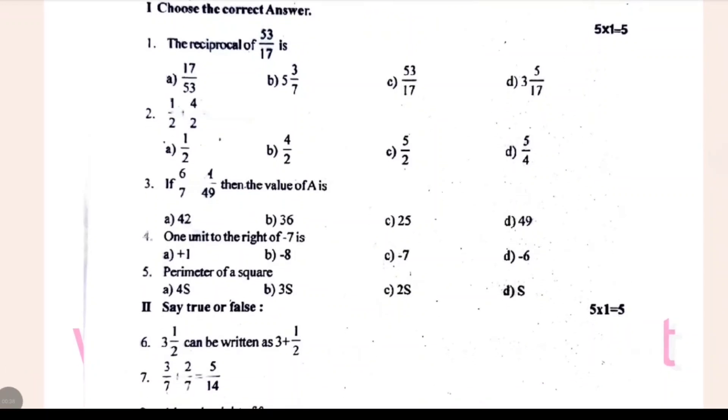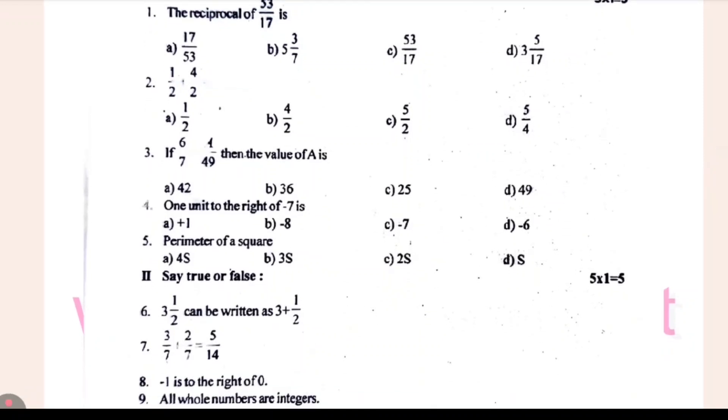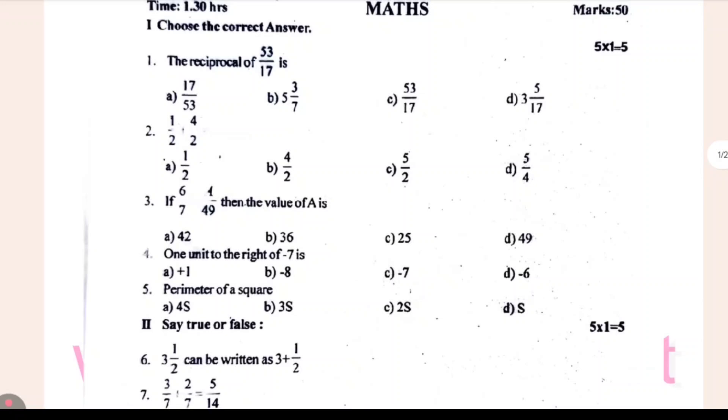The reciprocal of 53 divided by 17 is dash. 1 by 2 plus 4 by 2 is equal to dash. If 6 by 7 minus 1 by 47 then the value of A is dash. One unit of a right of minus 7 is dash. Perimeter of a square dash.